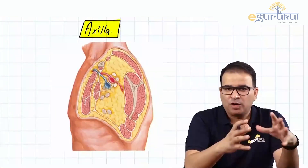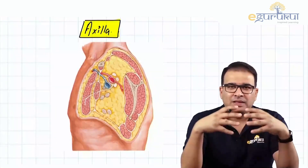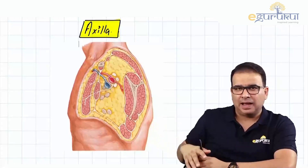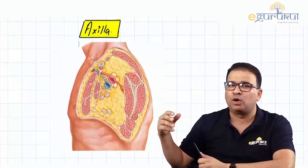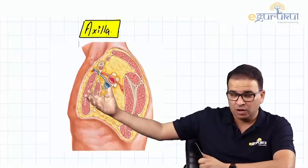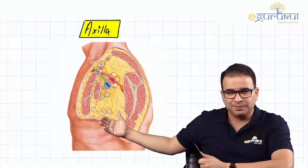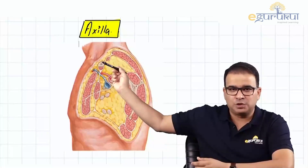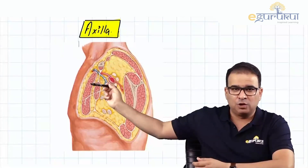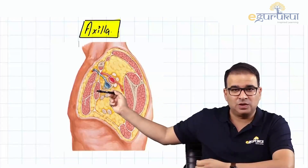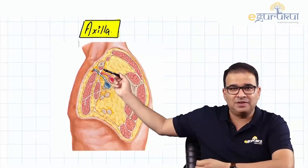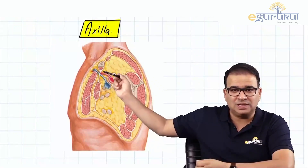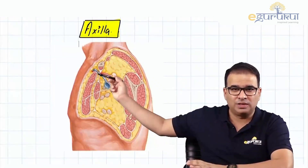In the axilla, as already discussed in the clavipectoral fascia, we saw the pectoralis major and minor muscle. While discussing the clavipectoral fascia, we got an idea about the structures forming the anterior wall of the axilla. This again is a sagittal section from the axilla. For a quick recap, this was the clavicle, the muscle in front is pectoralis major, and the muscle here is pectoralis minor. You can see the subclavius muscle, and both subclavius and pectoralis minor are enclosed in the clavipectoral fascia. So that is the anterior wall.